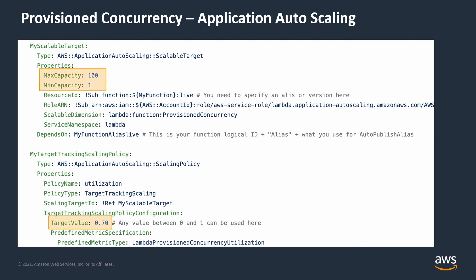You set a minimum capacity and maximum capacity together with a target utilization. The service will then respond to changes in demand and scale your provisioned concurrency appropriately.